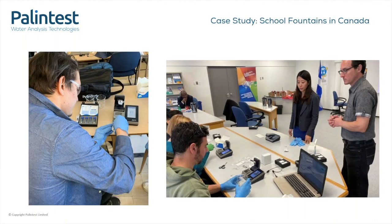Recently there has been a tightening of regulations in Canada, where the consent limit is 5 ppb for drinking water. There was a lot of buzz about this change in legislation, especially regarding school drinking fountains, which are one of the main ways people ingest lead in the US and Canada. During February, the Palen Test USA team were out training 250 people to use the Chemio heavy metals instrument to identify lead contamination in school drinking water and take action to protect children from lead poisoning.